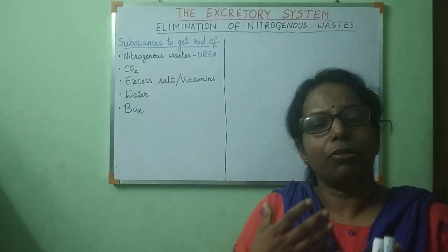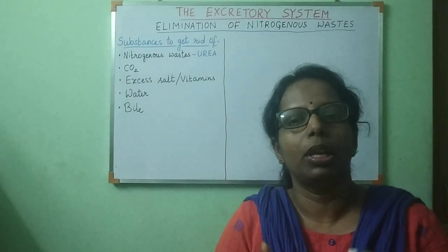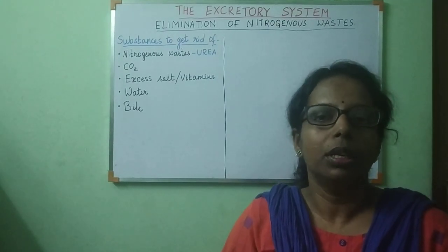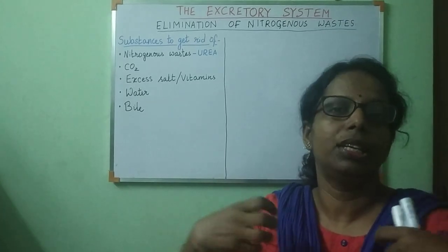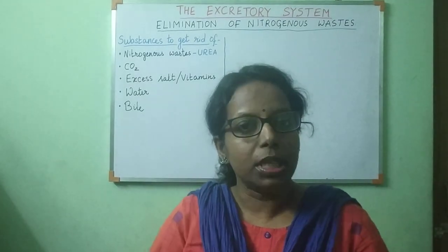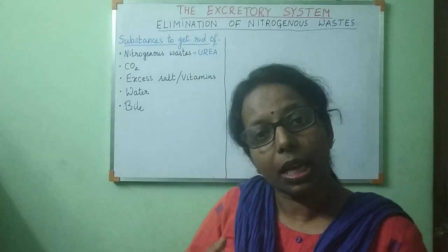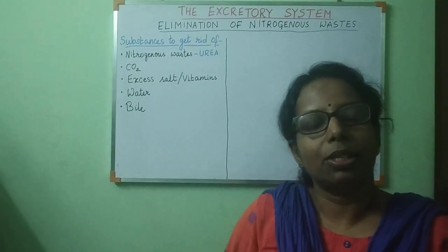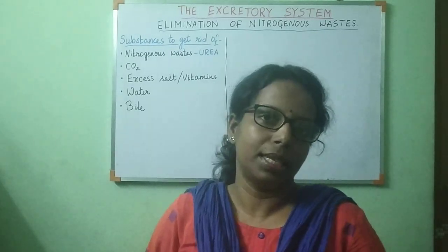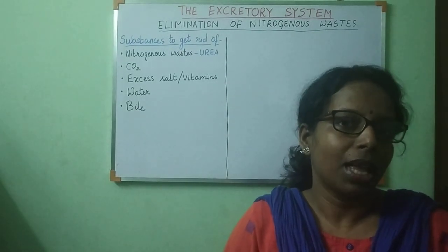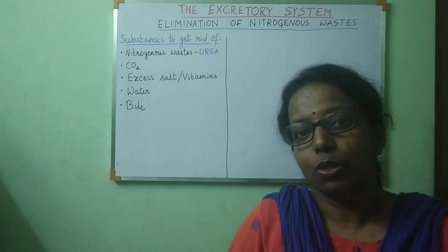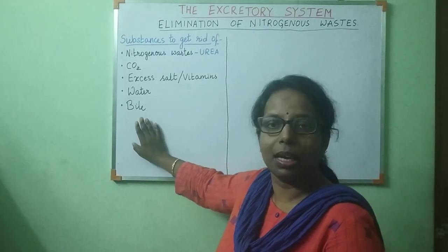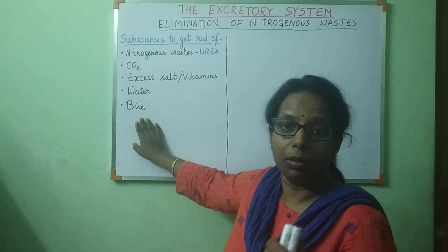Water — a lot of the water we consume is used in metabolic functions, and the rest is thrown out of our body. It helps to take away the heat produced in our body. Bile is another waste product: all the dead red blood cells are processed by the liver, broken down and converted into bile, which is given out from our body through the digestive system.